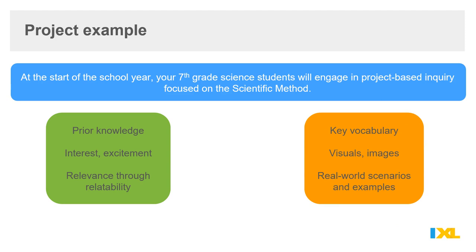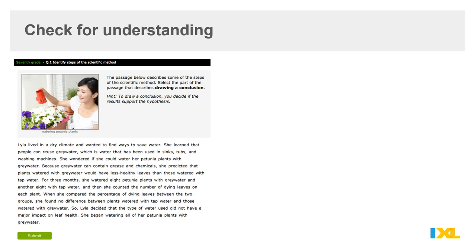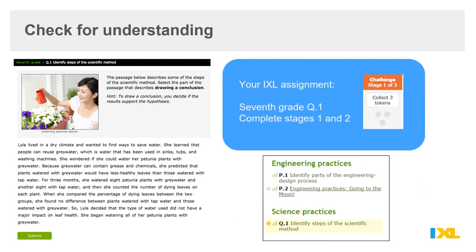They'll provide students with that scaffolding involving key vocabulary, providing visuals and images, and all kinds of different real-world scenarios and examples where the scientific method comes into play. Following that critical instruction, insert iExcel to do that check for understanding. You'll notice that our seventh grade Q.1 skill practice is a beautiful opportunity for diving into the scientific method, but also engaging the informational text. So what you might assign to your students is seventh grade Q.1, having them complete stages one and two of that specific skill practice.